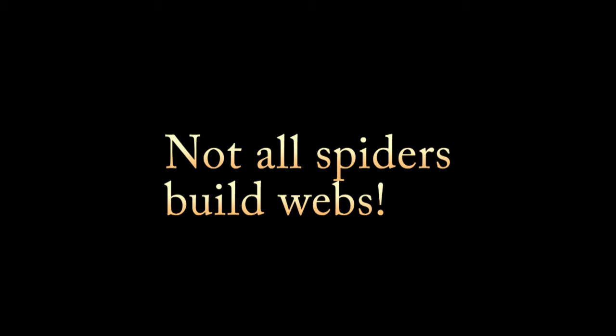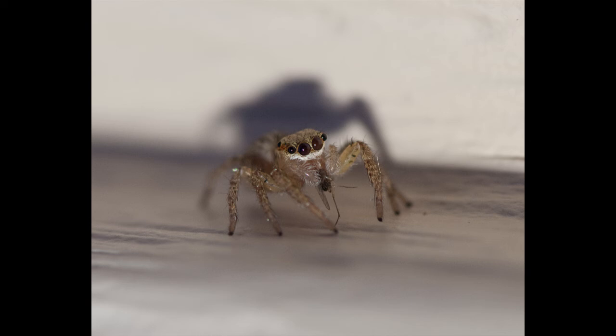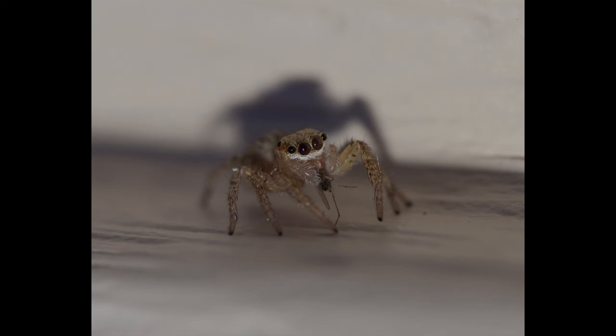Not all spiders build webs. The next spiders we're going to see are hunting spiders. Some of them have very large eyes; others are ambush predators. Jumping spiders are one of my favorites — they're so cute, I love their big eyes. Those two big eyes in the front are used for hunting, and they have six smaller eyes along the sides just to let them see what's going on around them.